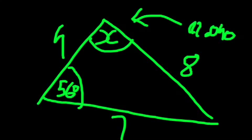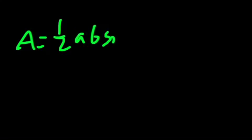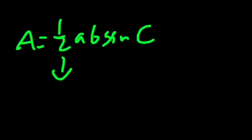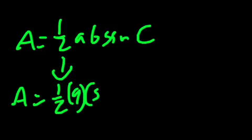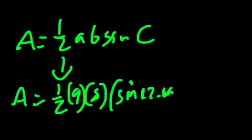So, A is equal to 1 half ab sine C. This becomes A is equal to 1 over 2 ab, which is just 9, 8, and the sine is of sine 42.09.